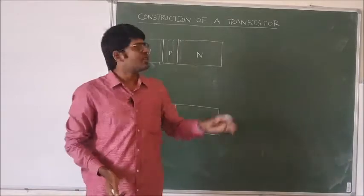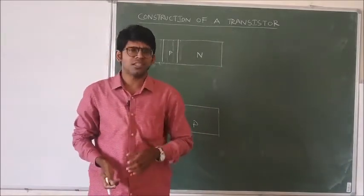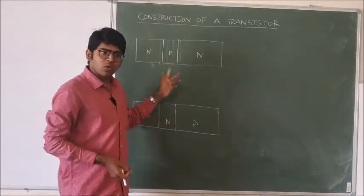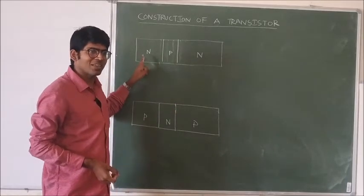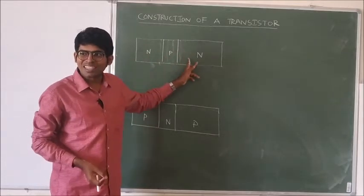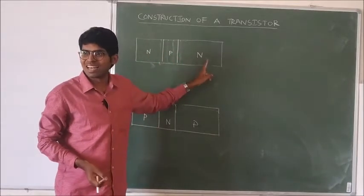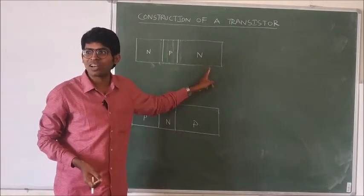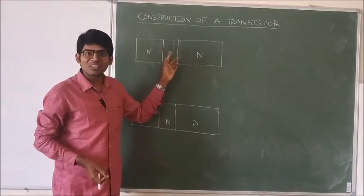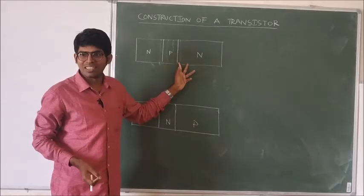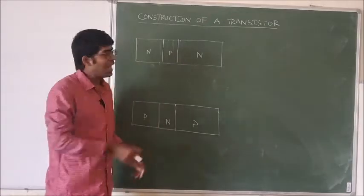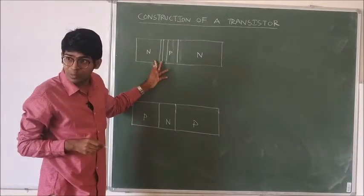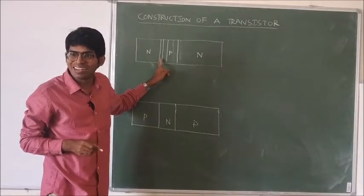In this class we are discussing about the construction of a transistor and we will also discuss about transistor bias. We can observe two types of transistors: one is NPN and the second one is PNP. In an NPN transistor we have three regions — emitter, base, and collector — out of which the emitter is heavily doped, the base is lightly doped, and the collector is not heavily doped. There are two PN junctions: the emitter junction and the collector junction. The depletion region extends more towards the base at the emitter junction because the emitter is heavily doped and the base is lightly doped.